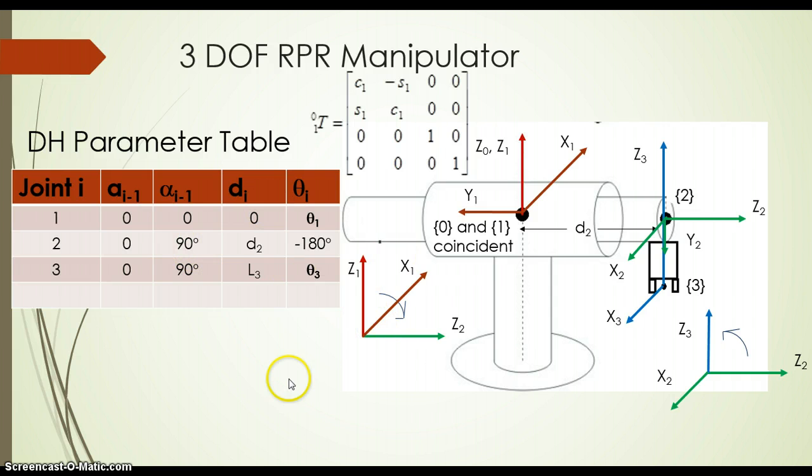Similarly, for joint 3, again we have assigned x2 using right-hand rule because z2 and z3 are again 90 degrees. So link twist alpha is 90 degrees. As they are intersecting, we have link length 0. The length of the tool L3 will be the part of column d, because L3 indicates the distance between x2 and x3, which is along z3 axis. So this L3 we need to put in the column of d. Theta 3 indicates the joint variable for joint 3.